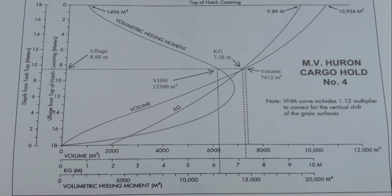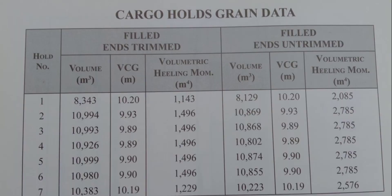Once you know how to use this graph, there is no need to proceed to the standard table — you already have your estimates. You now have all the details needed to prepare your NCB form for cargo hold number four, which is the partly filled compartment. The rest of the cargo holds are full. I will also show you the volumetric heeling moment for 100% filled holds. Cargo holds grain data shows filled and trimmed, and filled and untrimmed. In my experience, we most commonly use filled and trimmed, because the cargo was loaded with a normal spout without trimming.